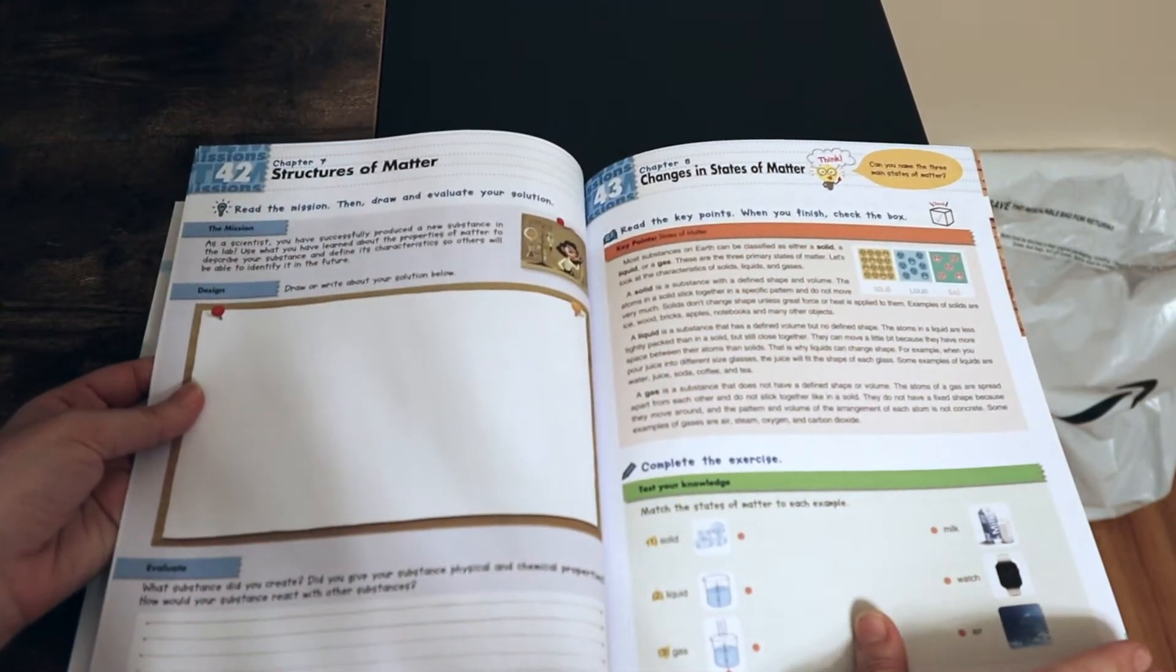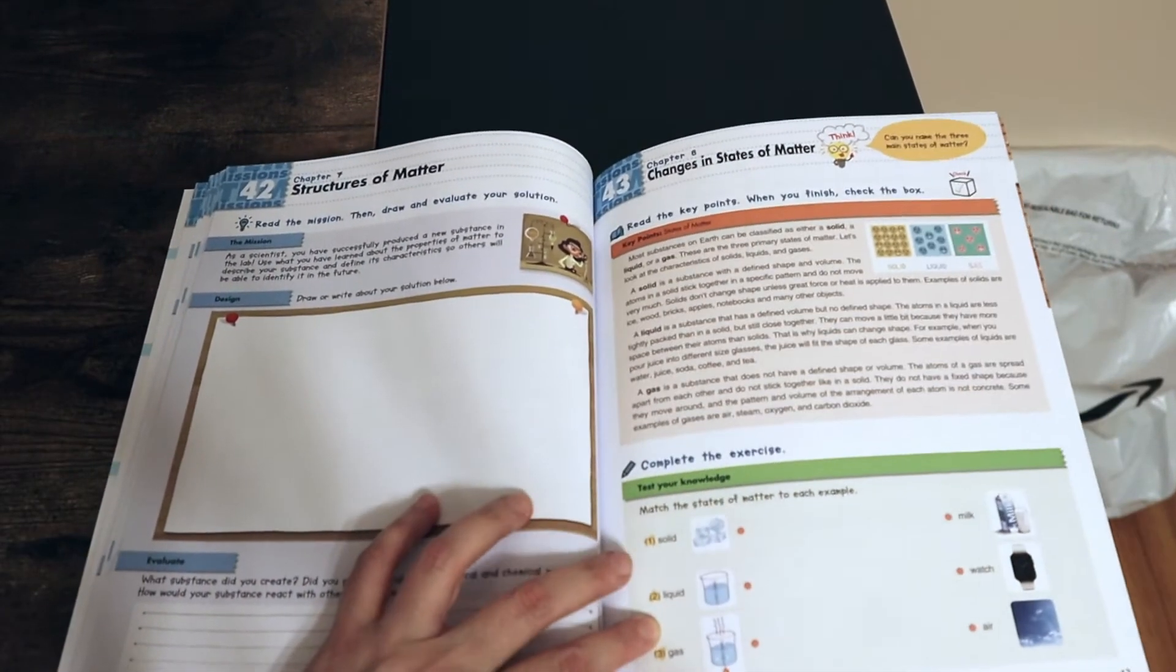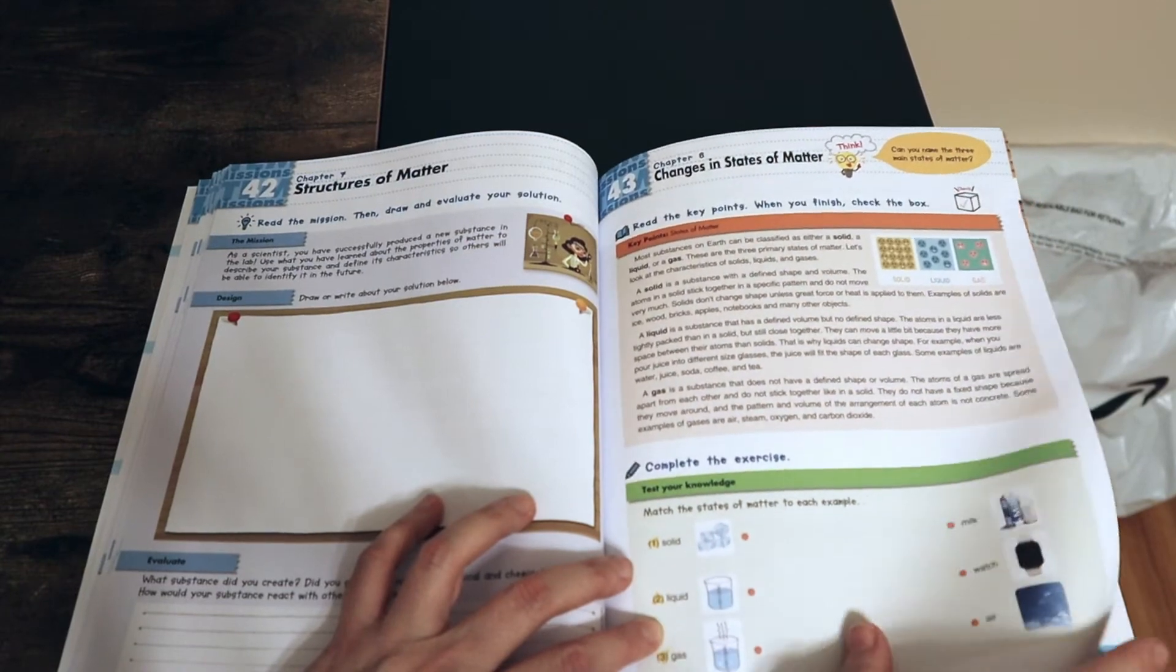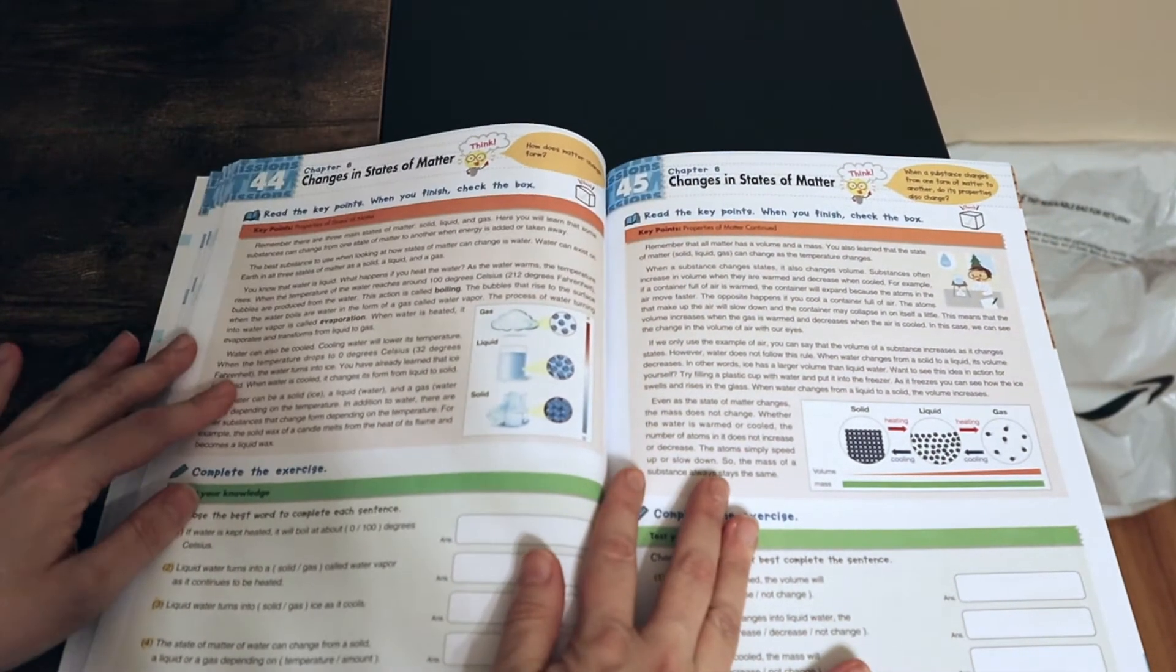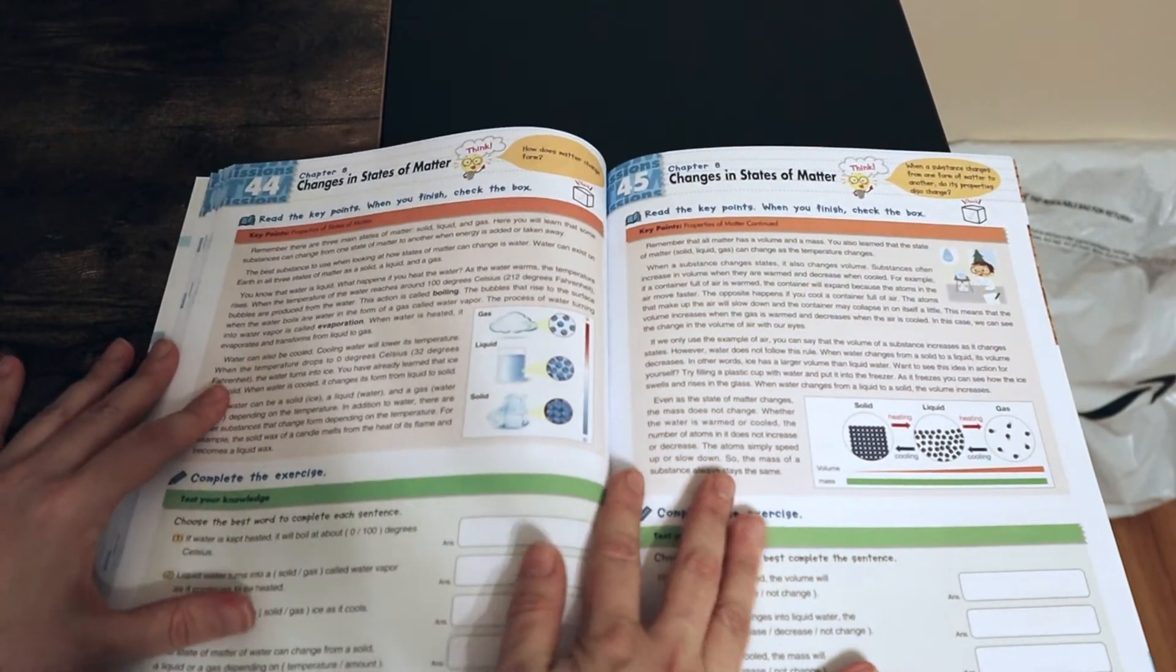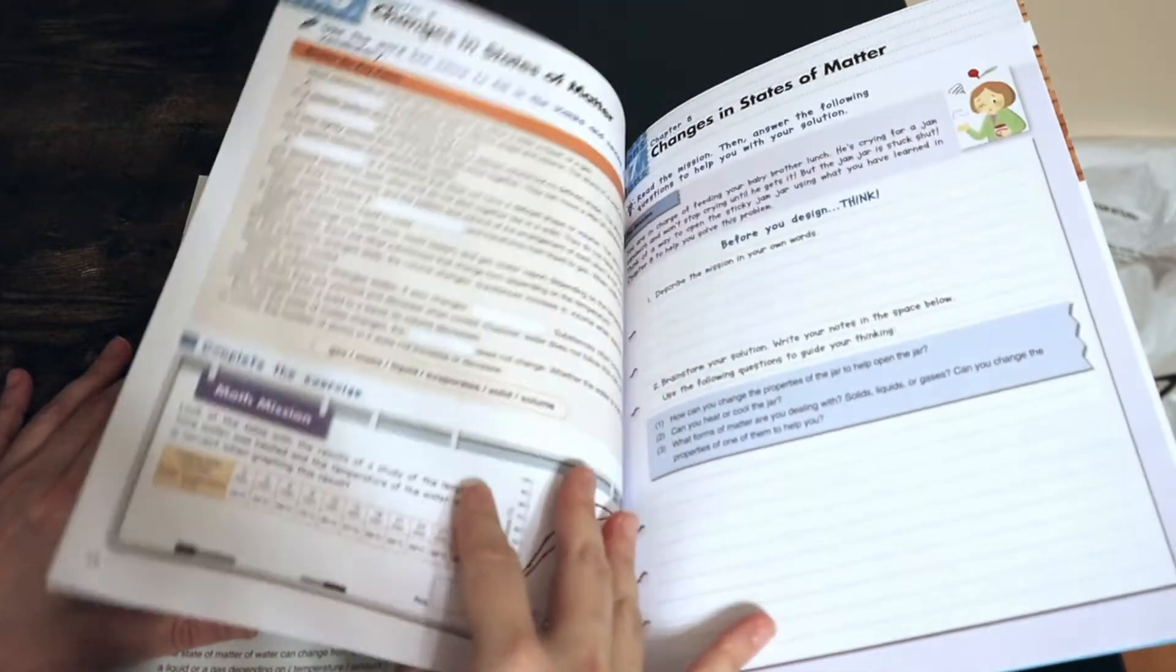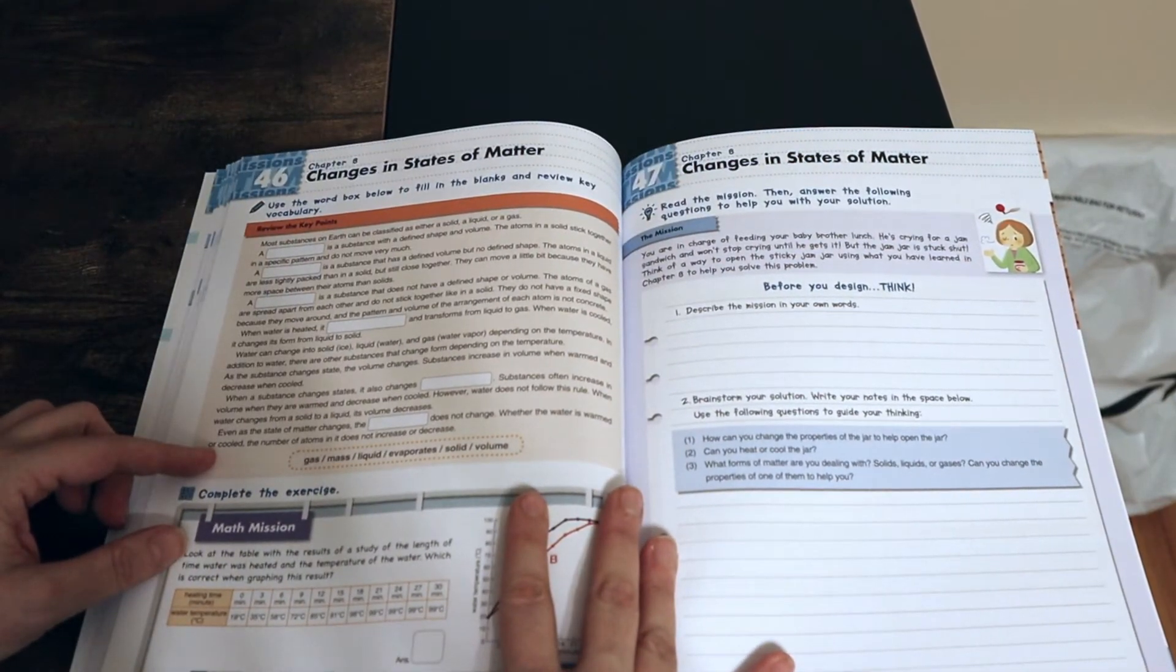And Chapter 8, changes in states of matter. So just a little science stuff for them to go through and get familiar with. Lots of fun to do. Gets the kids thinking and gives them all kinds of great information. I haven't actually started working with any of these books yet, but we will very soon.